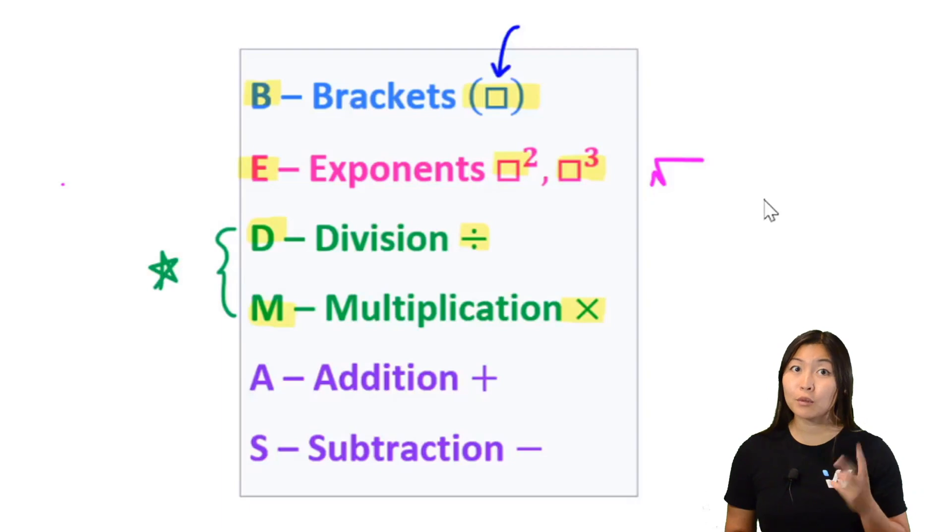Trick number two that a lot of students get confused on is this division part. Now if I just have the simple number 9 divided by 3, that's straightforward, that's a division. But sometimes they're going to be a little trickier. Sometimes they're going to have 9 fraction over 3. Fractions are the same thing as division. This is the same thing as 9 divided by 3.